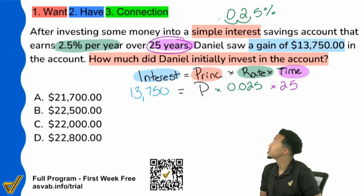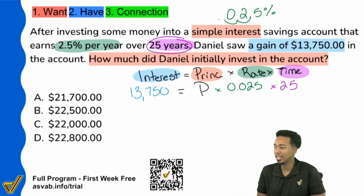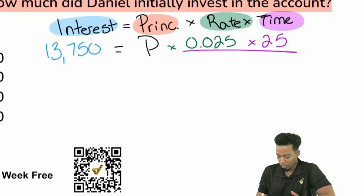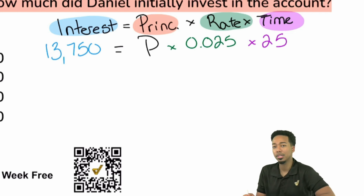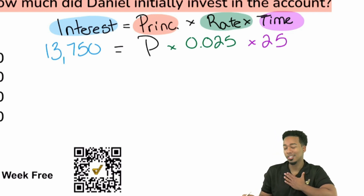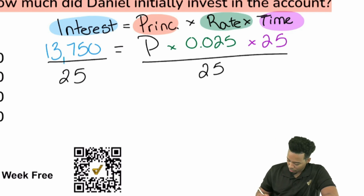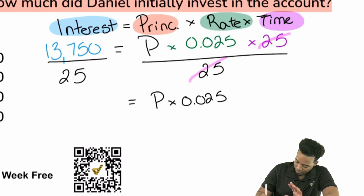So now what we need to do is simply solve this equation for P. I definitely understand how confusing dealing with decimals might feel, but let me walk you through step by step. So when I'm dealing with this, I could go ahead and just multiply these things together and then divide it all out — you're perfectly within your right to do that. But one thing I noticed is that 25 is actually a pretty convenient number to divide by. So the first thing I'm going to do is divide that 25 out — that's going to cancel out on the right side, leaving me with P times 0.025.